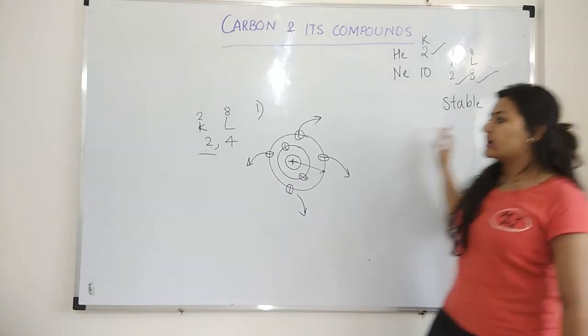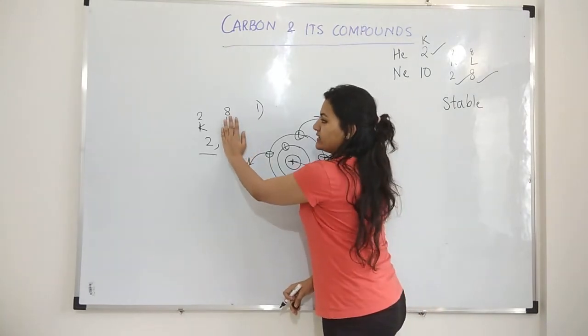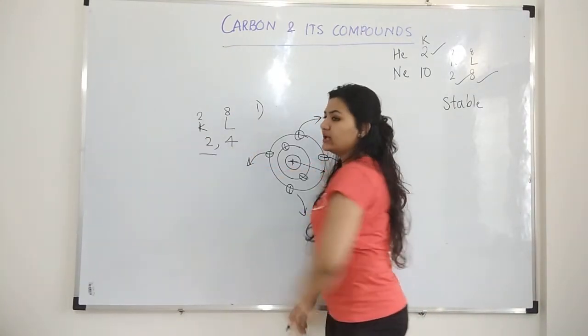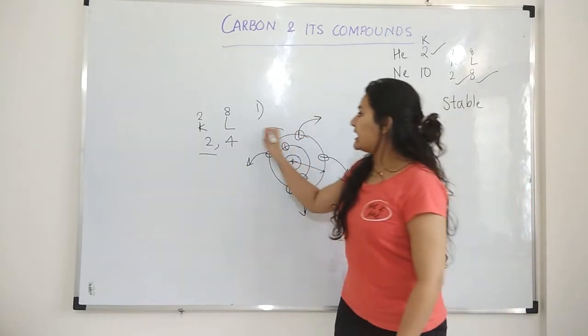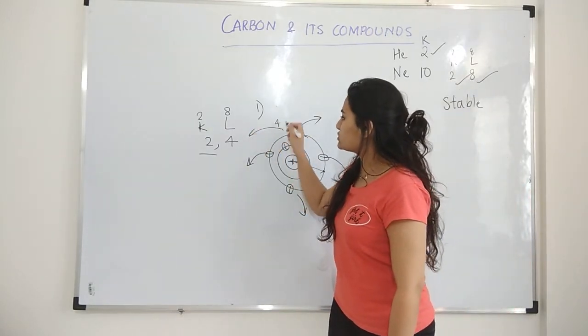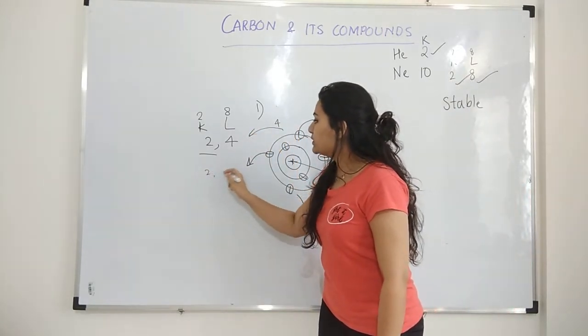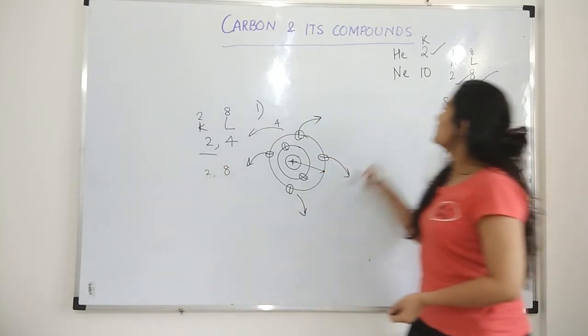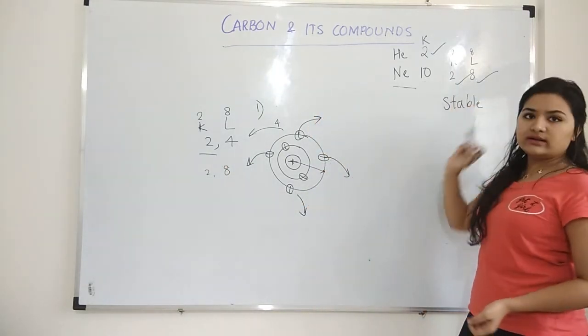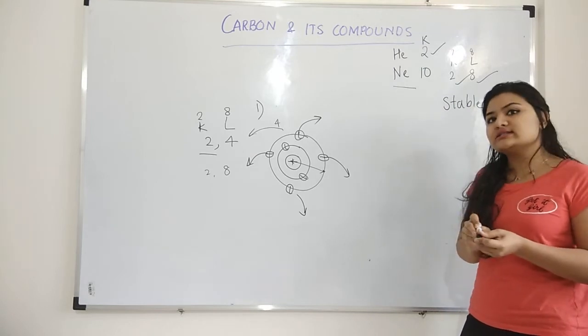To attain noble gas configuration, either it can lose four electrons and have two electrons in the first shell or it can add four electrons and become 2, 8 and that will be noble gas configuration, 2, 8. Right? That is to attain stability.